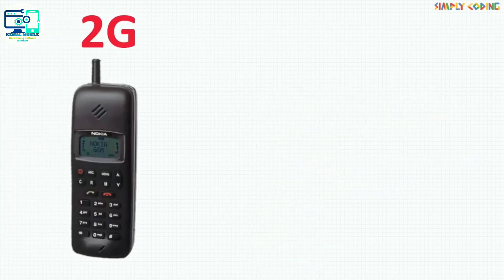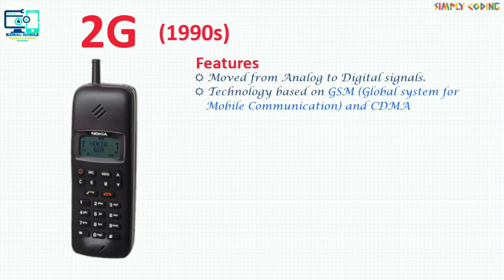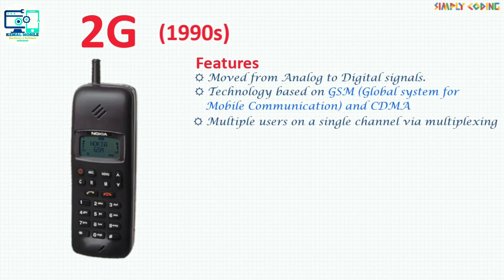Cell phones received their first major upgrade when they went from 1G to 2G. 2G was launched in the 1990s. The voice transmission moved from analog to digital signals. Technology was based on GSM, that is Global System for Mobile Communication, and CDMA.